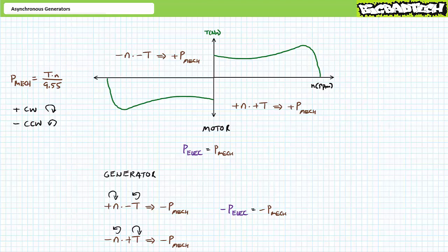I don't like this polarity shell game any more than you, but I will grudgingly admit it yields consistent, usable results. Again: motors consume electrical power input and produce mechanical power output. Generators, in contrast, consume mechanical power input and produce electrical power output. The polarity convention allows us to remain consistent and will be very useful in the very near future.